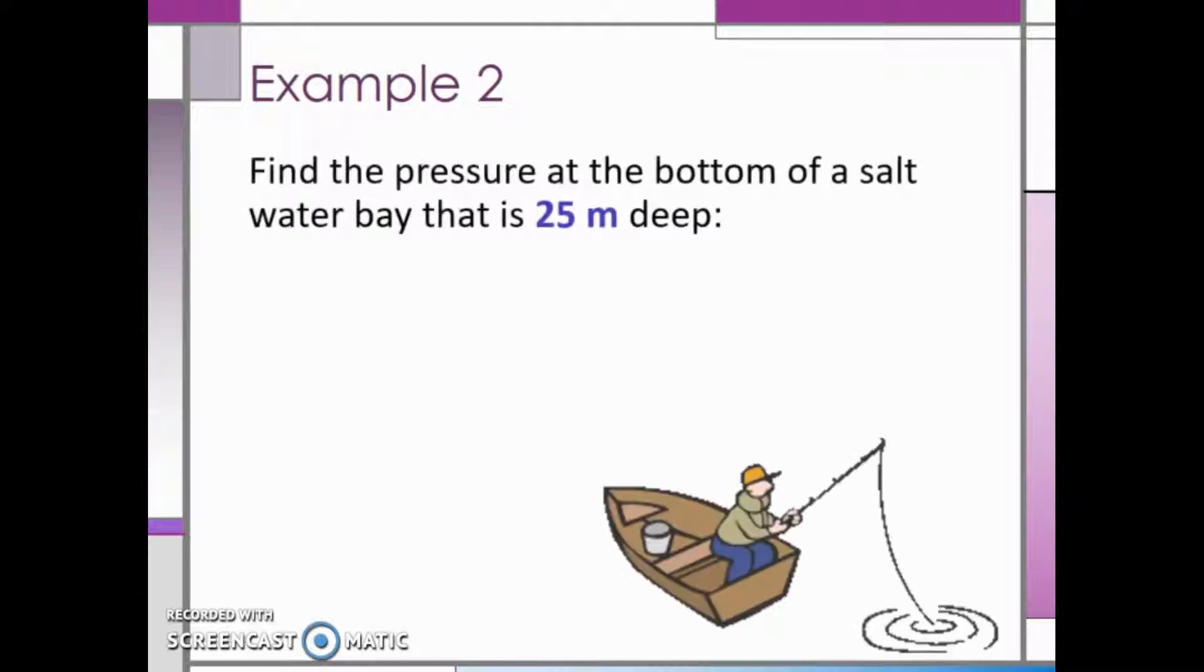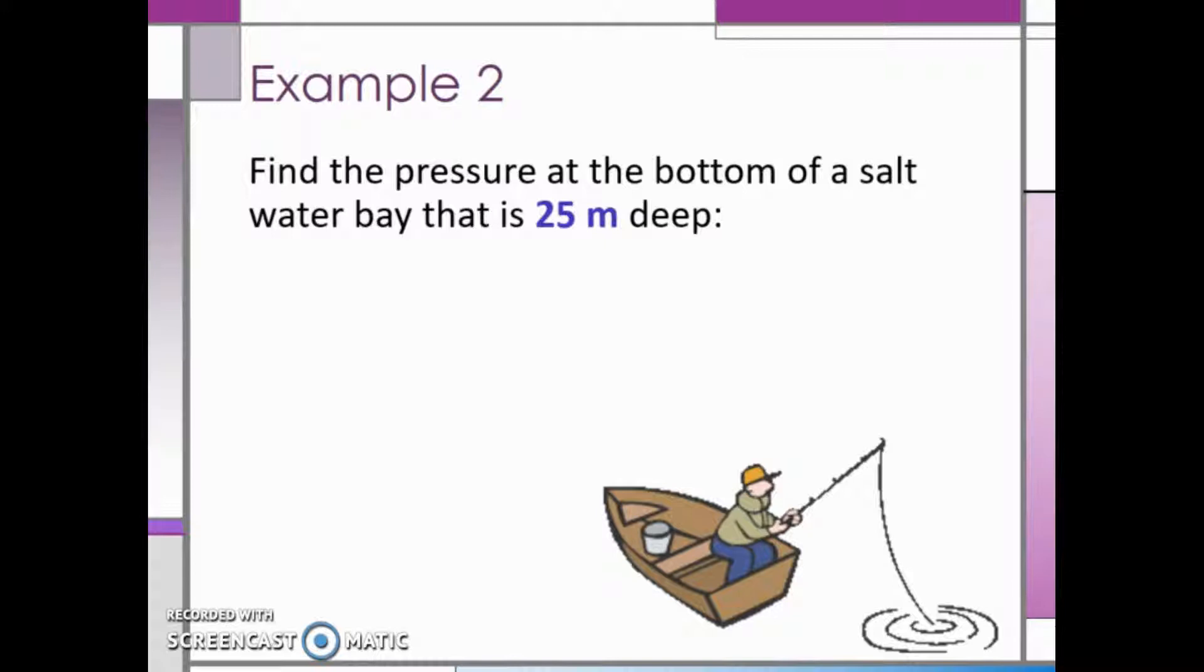Let's look at one more example. Now we want to find the pressure at the bottom of a saltwater bay that is 25 meters deep. Again, we want to find pressure, which is equal to the depth multiplied by the weight density. The depth is now 25 meters because we are trying to find the pressure at the bottom of the bay.